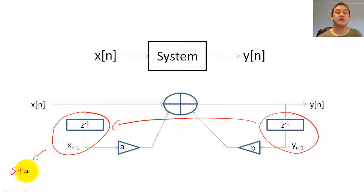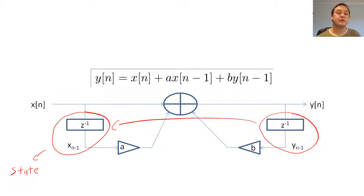More formally, the state of a system at a given time is a minimal set of variables which together with the current input, x of n, uniquely define y of n. Since this filter is defined by the following difference equation, the state of the system would be the set x of n minus 1 and y of n minus 1.